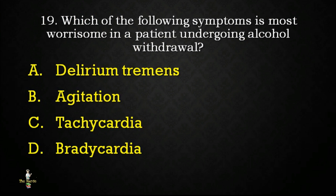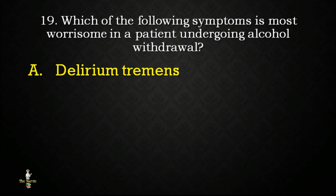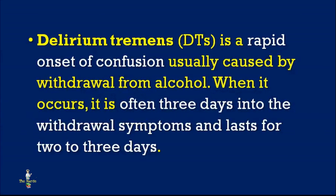Next question: which of the following symptoms is most worrisome in a patient undergoing alcohol withdrawal — delirium tremens, agitation, tachycardia, or bradycardia? Correct answer is delirium tremens. Delirium tremens (DTs) is a rapid onset of confusion usually caused by withdrawal from alcohol. It often occurs 3 days into the withdrawal symptoms and lasts for 2–3 days.